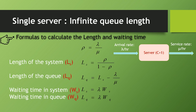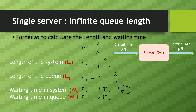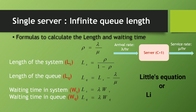To calculate the length and waiting time in the system and in the queue: once rho is known, you can calculate all other values. The length of the system Ls equals rho divided by (1 minus rho). The length of the queue Lq equals Ls minus lambda by mu. The waiting time in the system: since Ls equals lambda times Ws, Ws equals Ls divided by lambda. The waiting time in the queue: since Lq equals lambda times Wq, Wq equals Lq divided by lambda. These two equations are known as Little's equations.